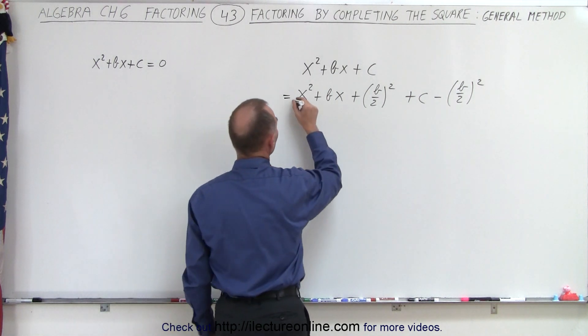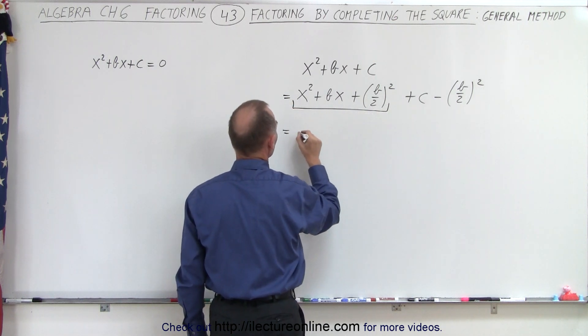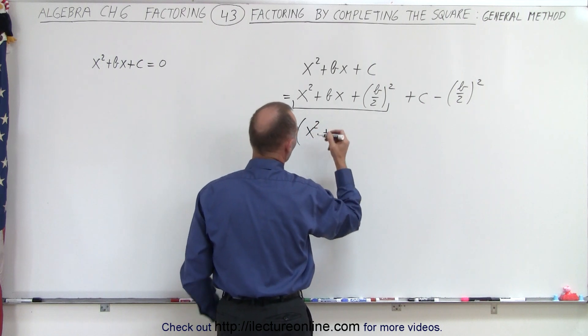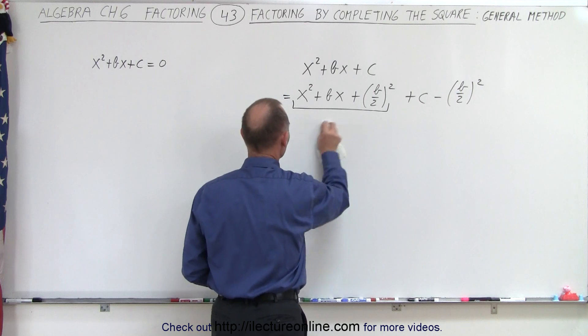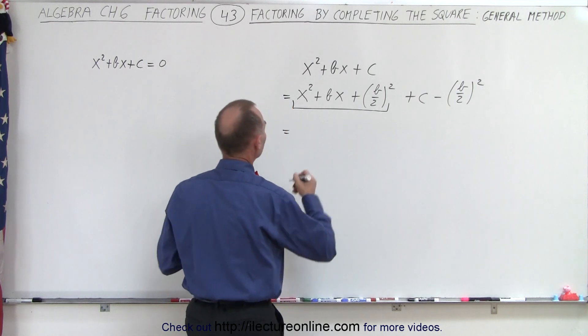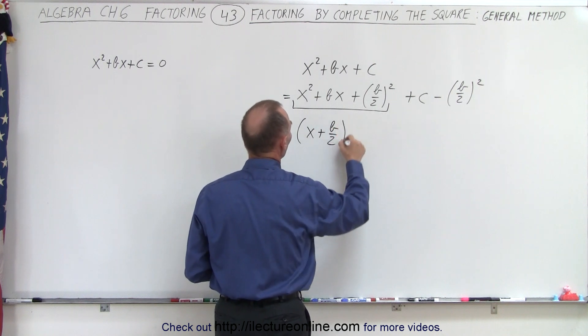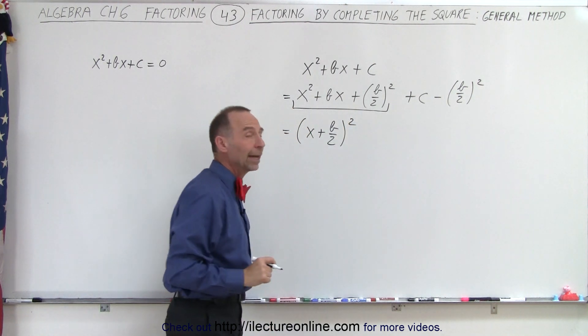The next thing to do is to realize that this is now a perfect square and can be factored as such. So this can be written as a quantity... oh no, not x squared, that's not what we want to write, because we're actually factoring it. So this can be written as (x + b/2)². When we multiply this out, we get this trinomial again.